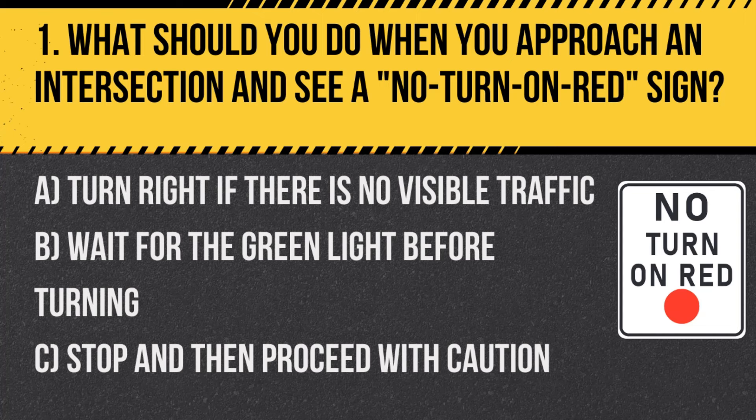Question 1: What should you do when you approach an intersection and see a no turn on red sign? A. Turn right if there is no visible traffic. B. Wait for the green light before turning. C. Stop and then proceed with caution. Answer: B. Wait for the green light before turning.